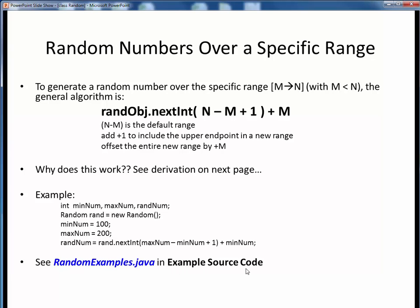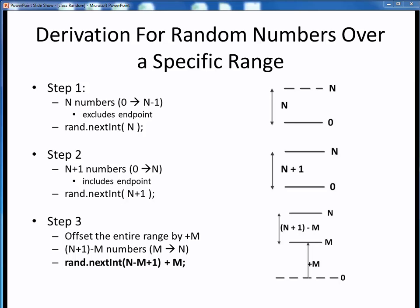It's good to have a nice simple formula showing how to compute something, but it's even better to understand how and why that formula works. Here's a derivation for that expression on the prior slide showing how to generate random numbers over a specific range. As a starting point in step one, let's start with the simplest form of generating a random number from zero up to, but not including, the endpoint value N.